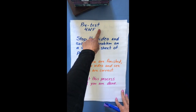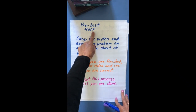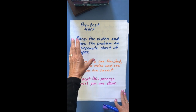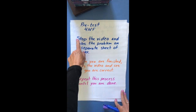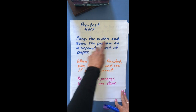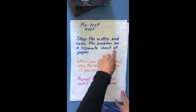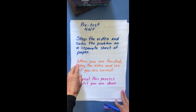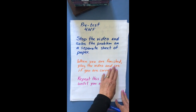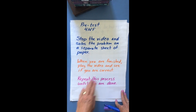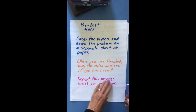This is a pre-test for 4NF. Start the video and go to problem one. Stop the video on the first problem, solve it on a separate sheet of paper, then turn the video back on to see if you were correct. Repeat this process until you've finished all the problems. Here's the first problem.